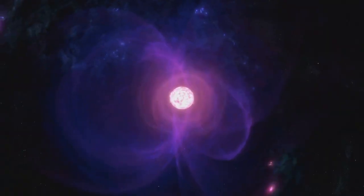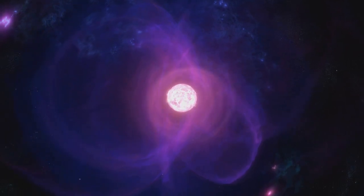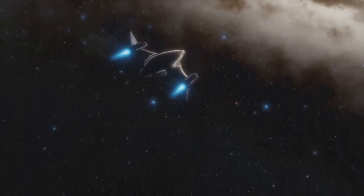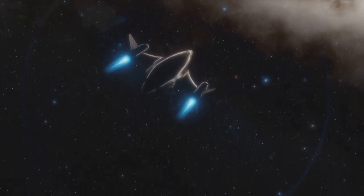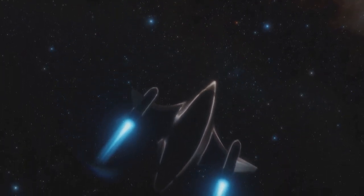As the star expands, its surface cools down, shifting its color from white-hot to a magnificent red. The star's luminosity, or brightness, also increases, making it a beacon in the night sky. This metamorphosis into a red giant or supergiant is a testament to the star's resilience, a last hurrah before the inevitable decline.